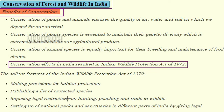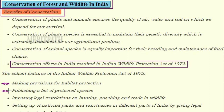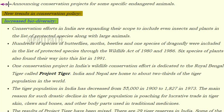Conservation efforts in India resulted in the Indian Wildlife Protection Act of 1972. Its salient features include: making provisions for habitat protection, publishing a list of protected species, imposing legal restrictions on hunting, poaching, and trade in wildlife, setting up national parks and sanctuaries across India, and announcing conservation projects for specific endangered animals.